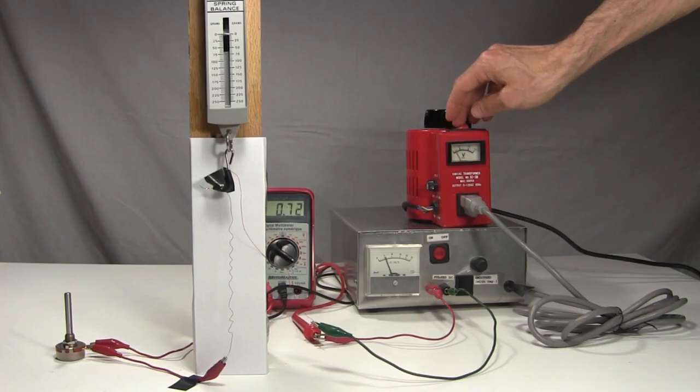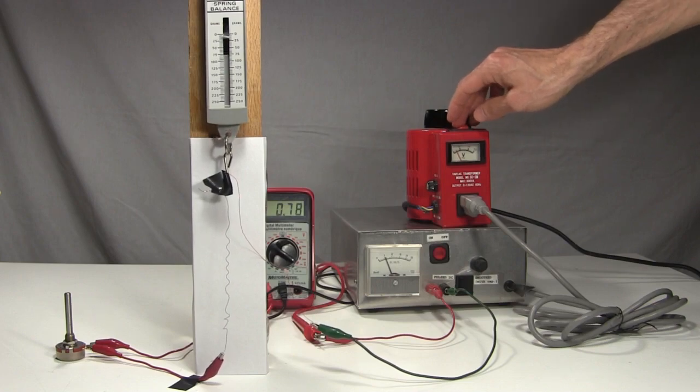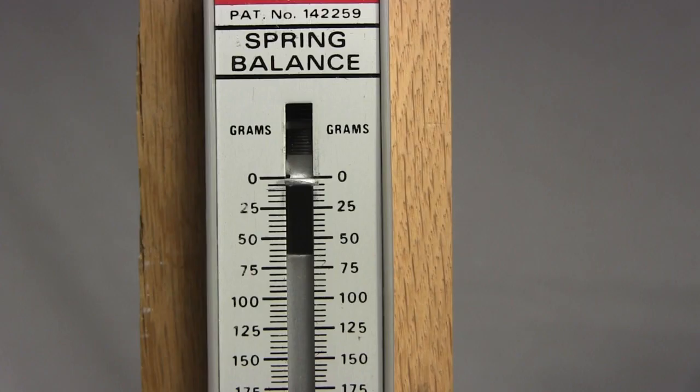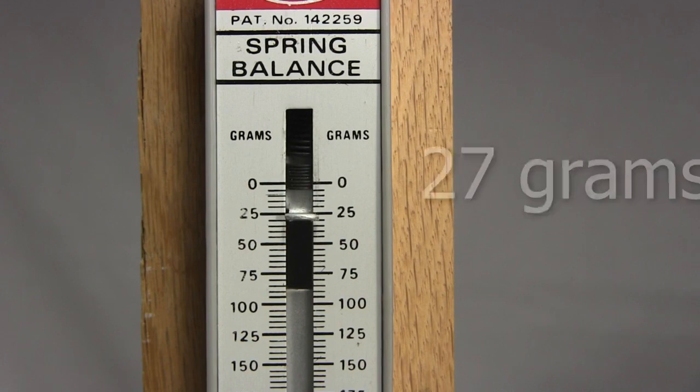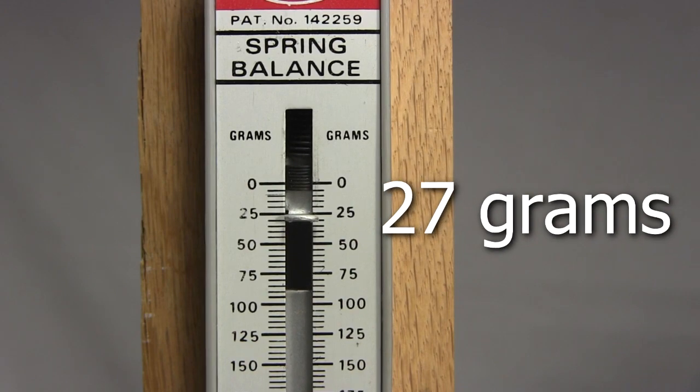When I apply the electrical current, the nitinol tries to go to its programmed spring shape, pulling down on the spring balance. The balance acts as if there's a 27 gram mass hanging from it.